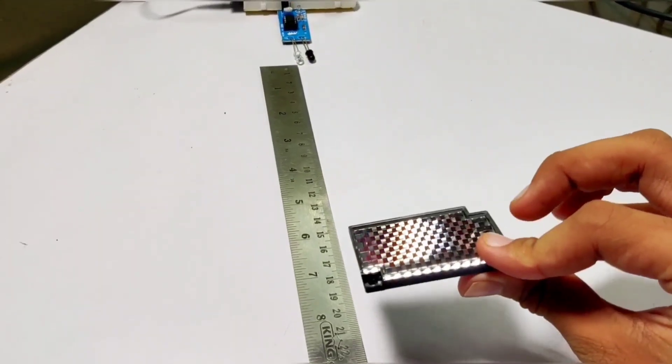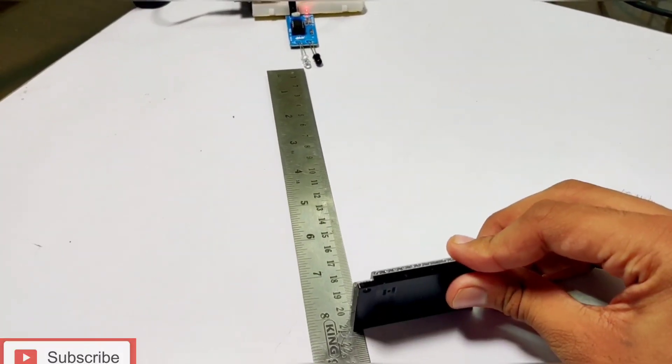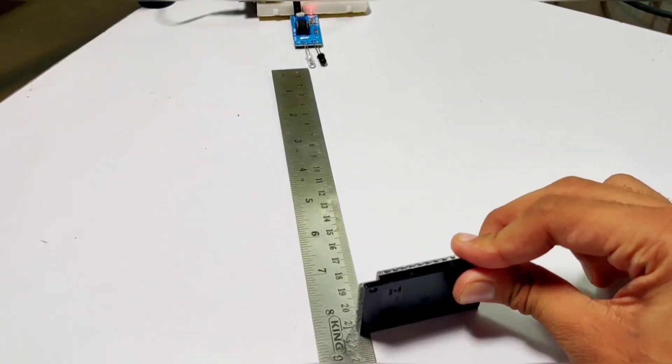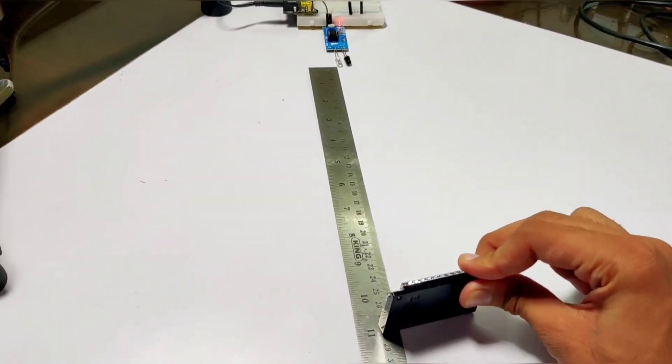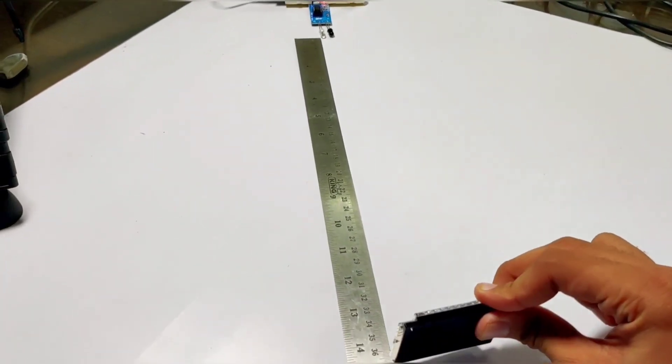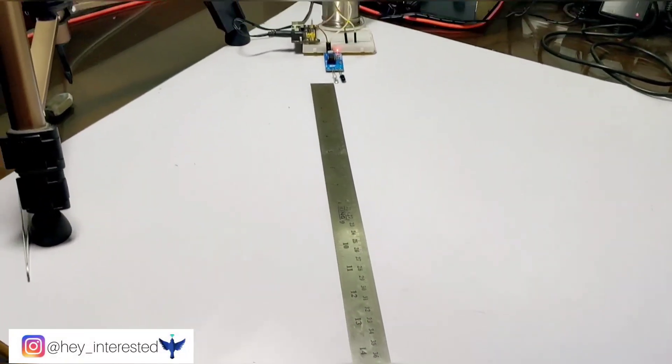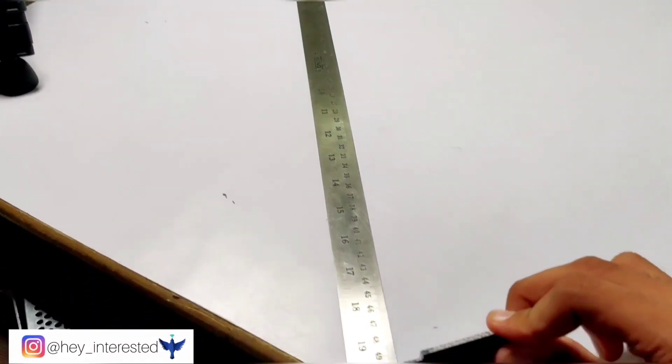So here is my reflector which is of black color and you can see the LED indication when the reflector comes in the sensing range. If I move the reflector away, it is still sensing. You can see there it is still sensing.